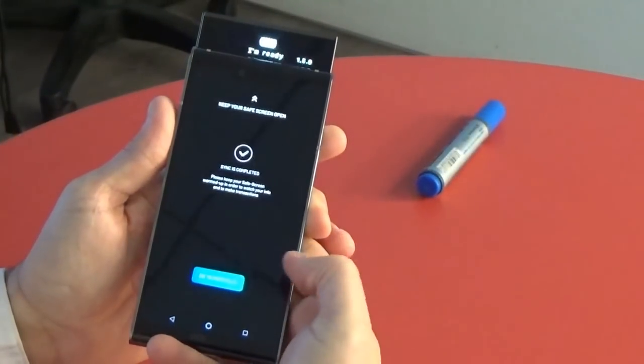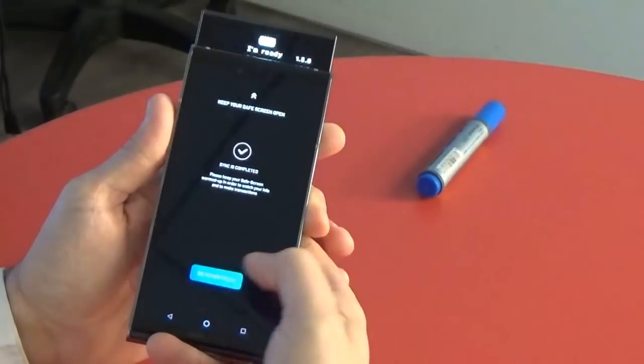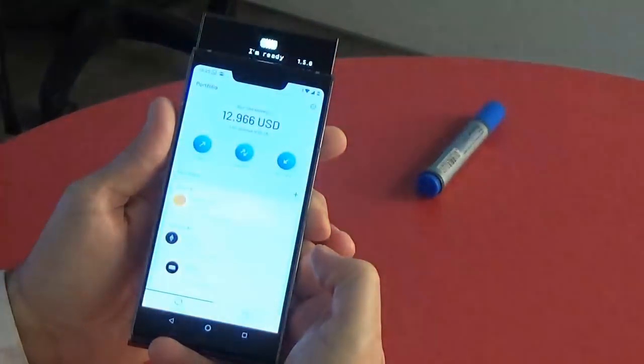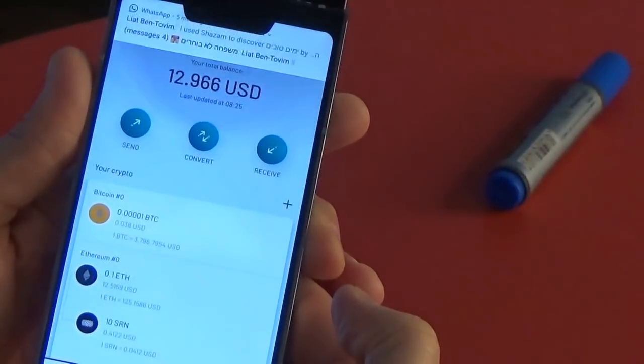The sync is over. Now I'm going to the portfolio. Now you can see that I have only $12 in crypto.